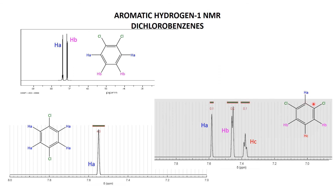The chemical shifts also reflect the proximity to the chlorines. HA is very close to two chlorines, so electron density is pulled away strongly — most deshielded and furthest downfield. HB is close to one chlorine each, so not quite as far downfield but still downfield. HC is a long way from both chlorines. So there are the dichlorobenzene spectra, as predicted by our earlier analysis.